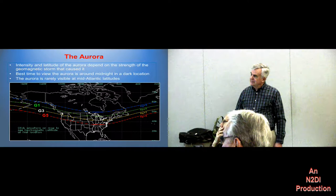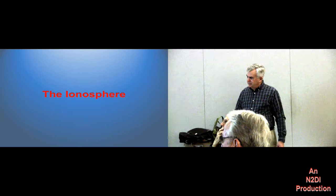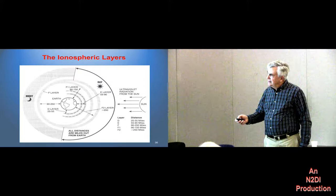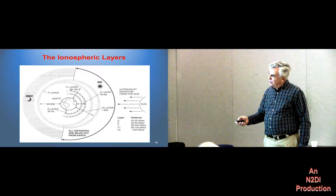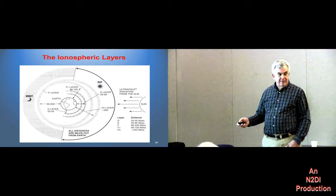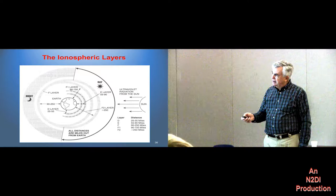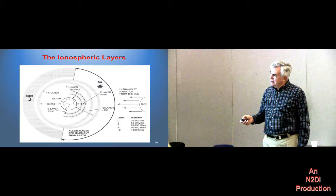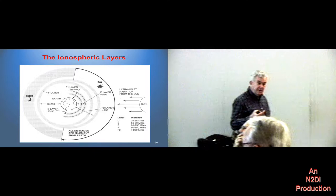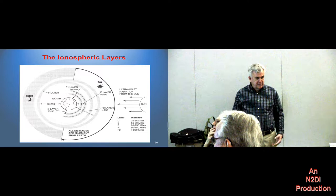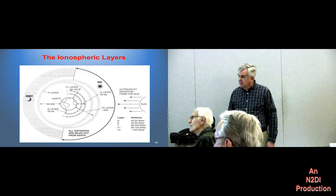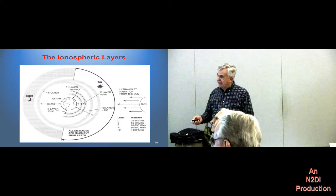Briefly looking at the ionosphere. You've probably heard about the F layer. During daytime it splits into two layers called F1 and F2. For those of us who like to work DX, it's the F2 layer we really care about — it's the highest refracting area, about 250 miles over our head. At night it becomes the F layer. Then there is the E layer that primarily causes sporadic E propagation — that's the thing that causes 6 meters and even 2 meters to open up for long distances, mostly in June and July. And then there's the absorbing D layer — no signals get refracted from the D layer, but they do get absorbed, especially during SIDs.